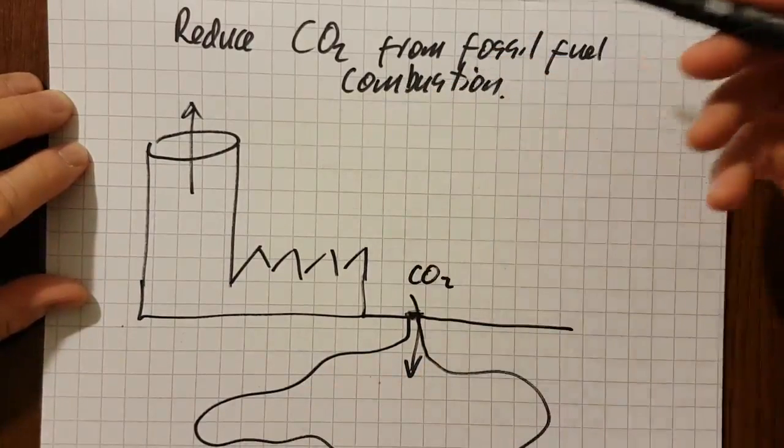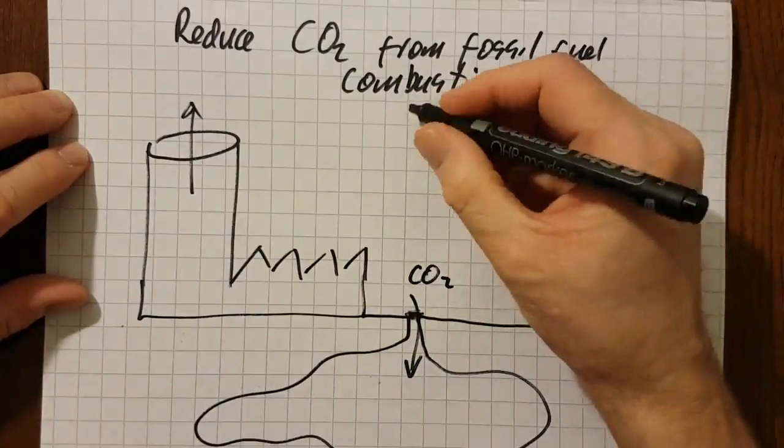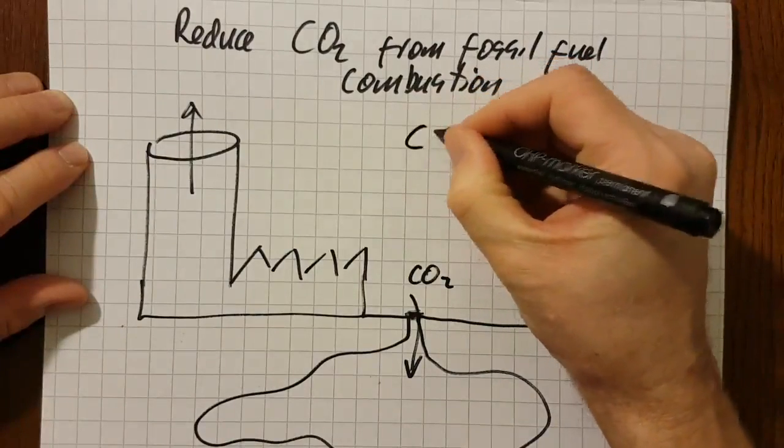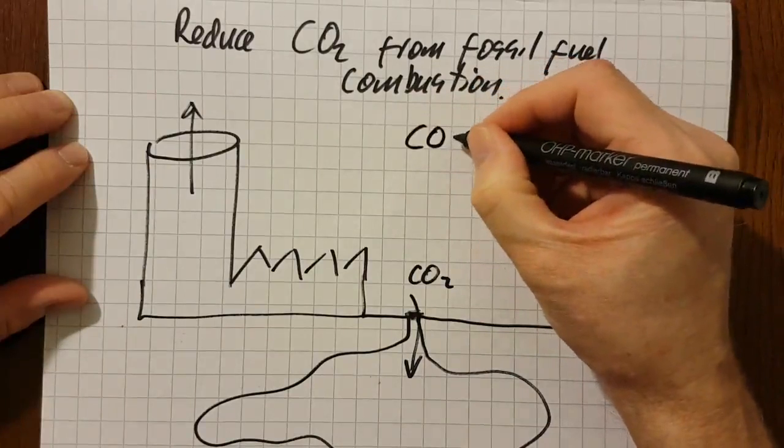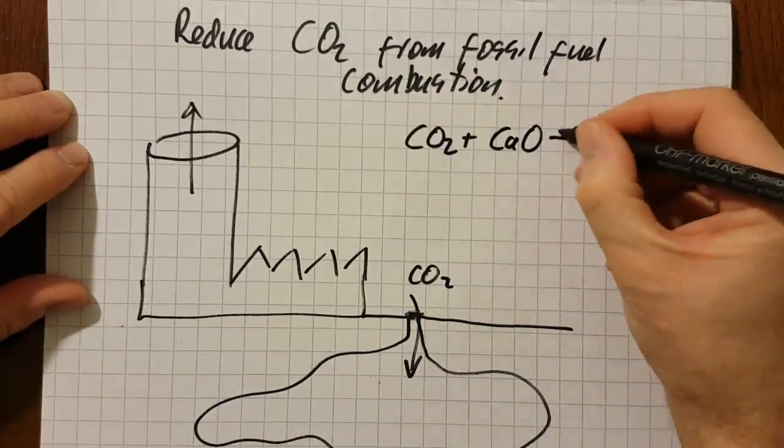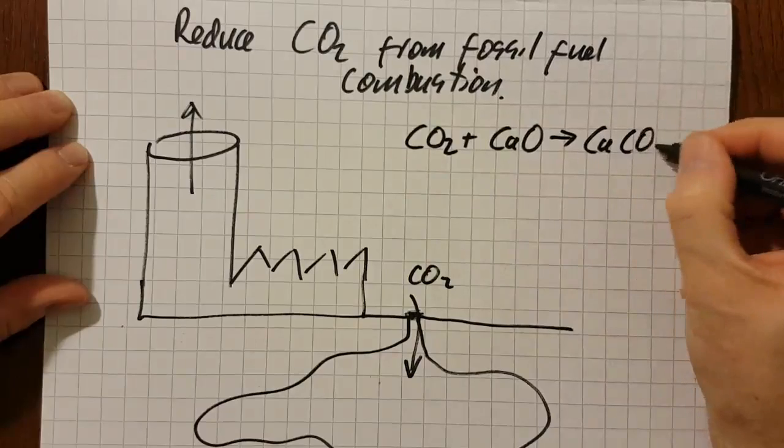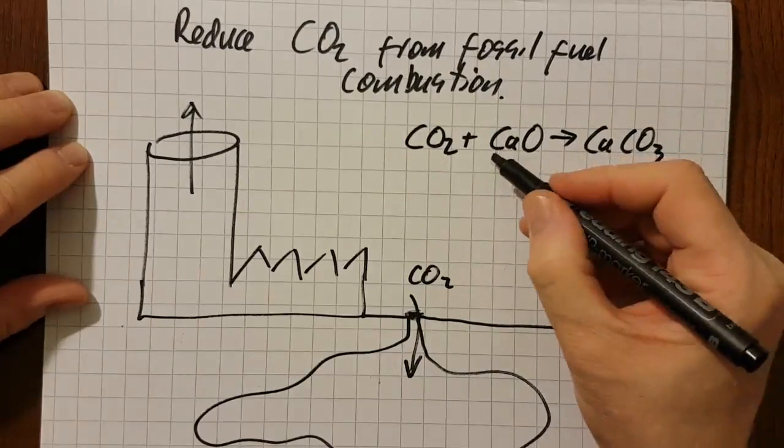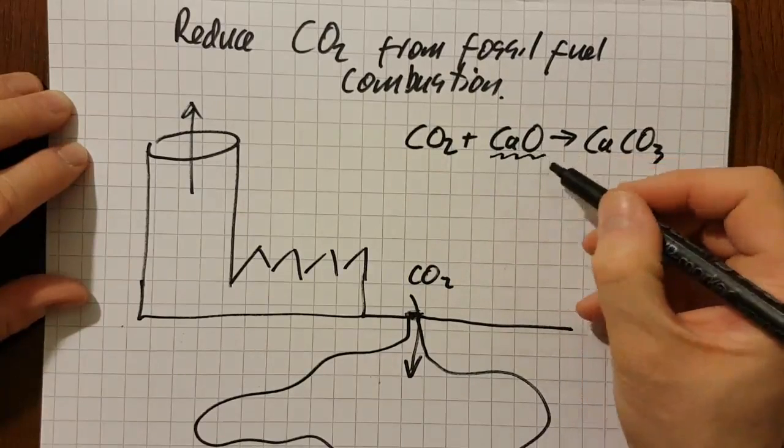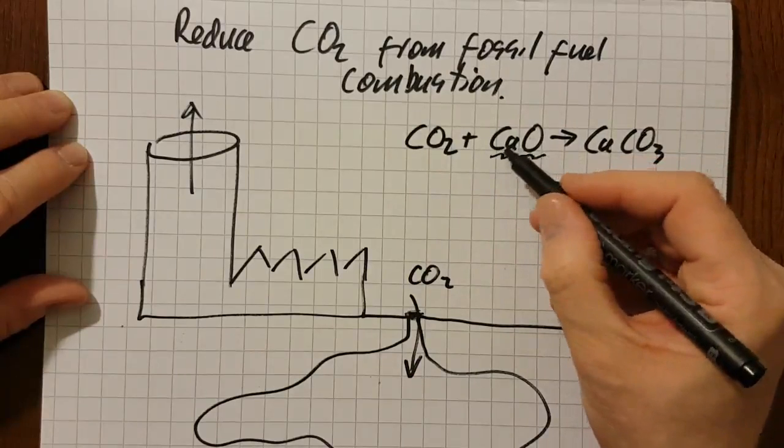Other ways you can remove carbon dioxide from fossil fuel combustion is you can react the carbon dioxide with calcium oxide, and that will turn into chalk. But of course, you need to expend energy, time and money to make this calcium oxide.